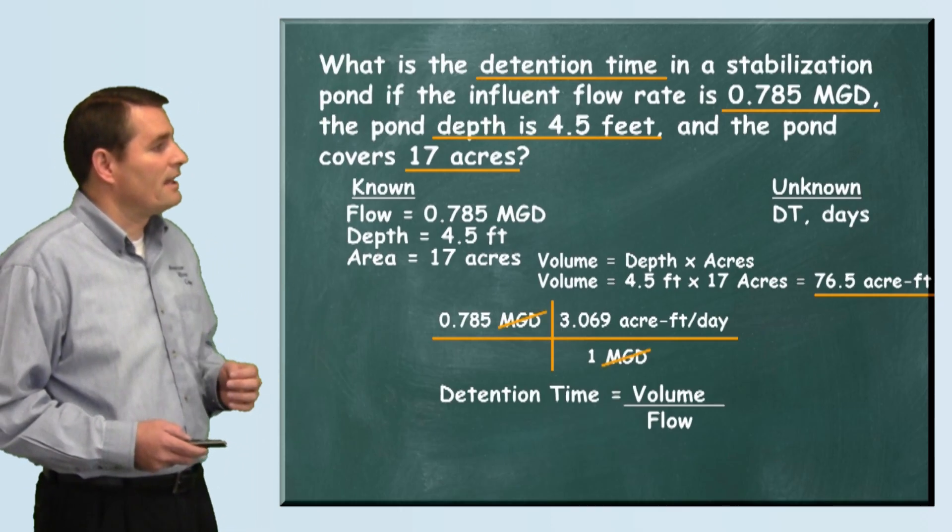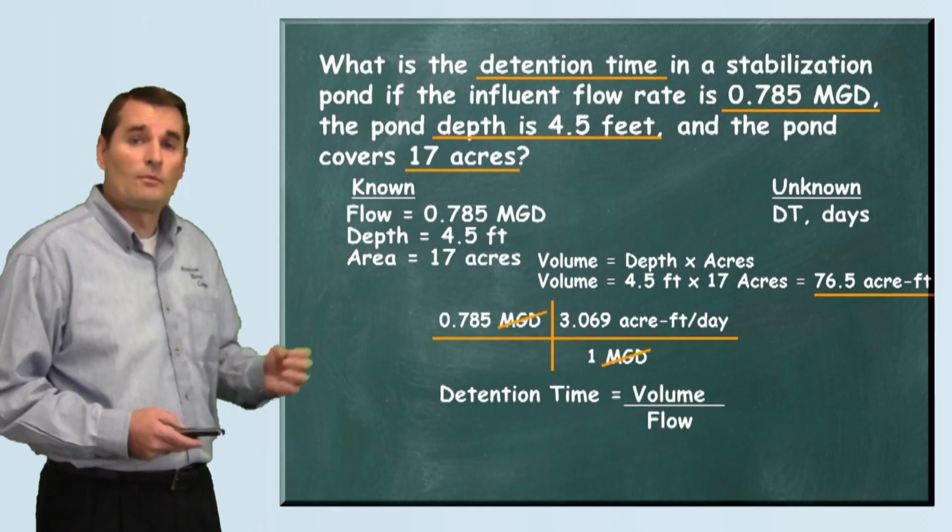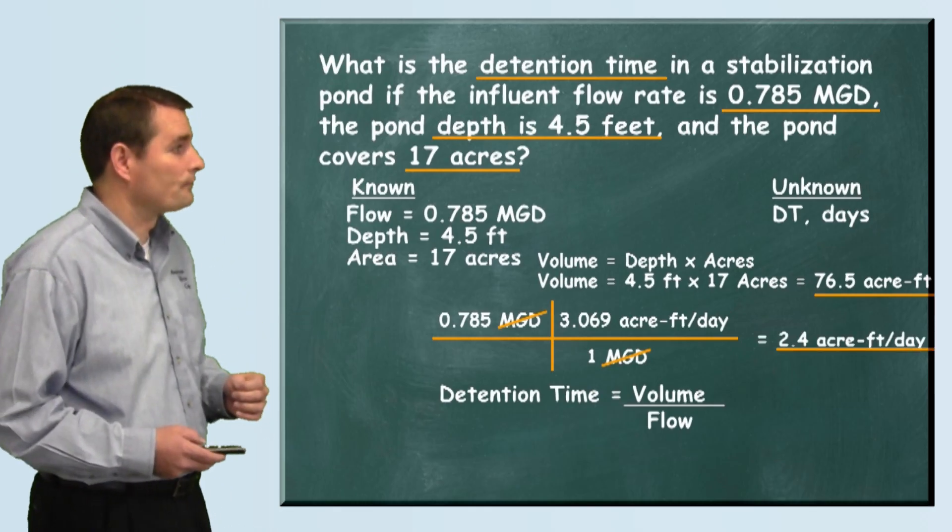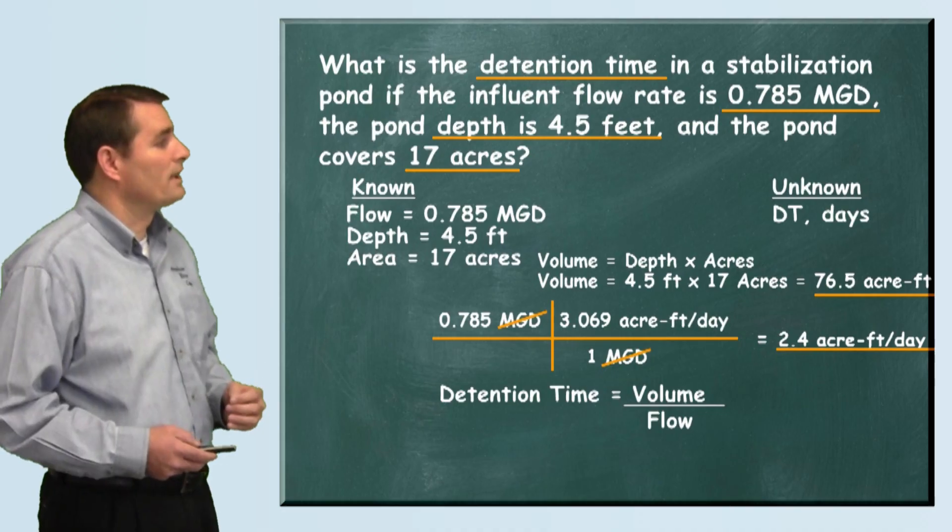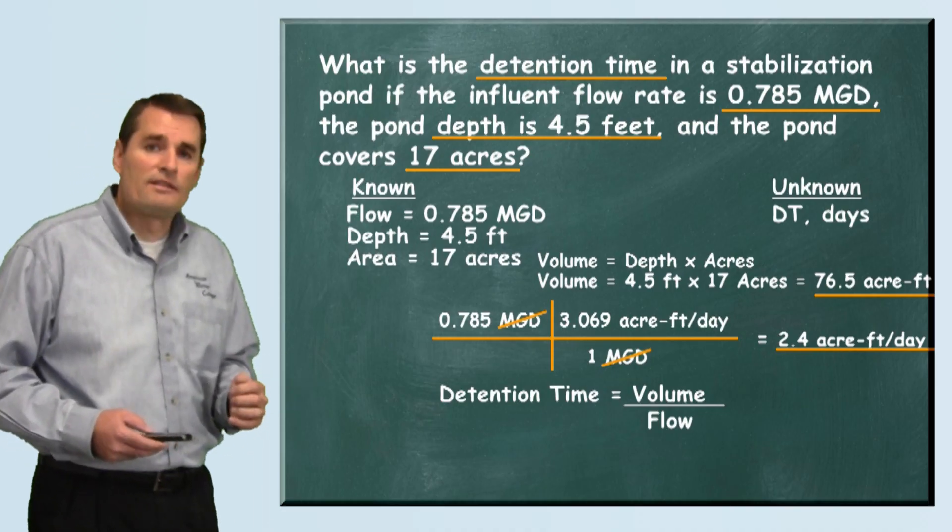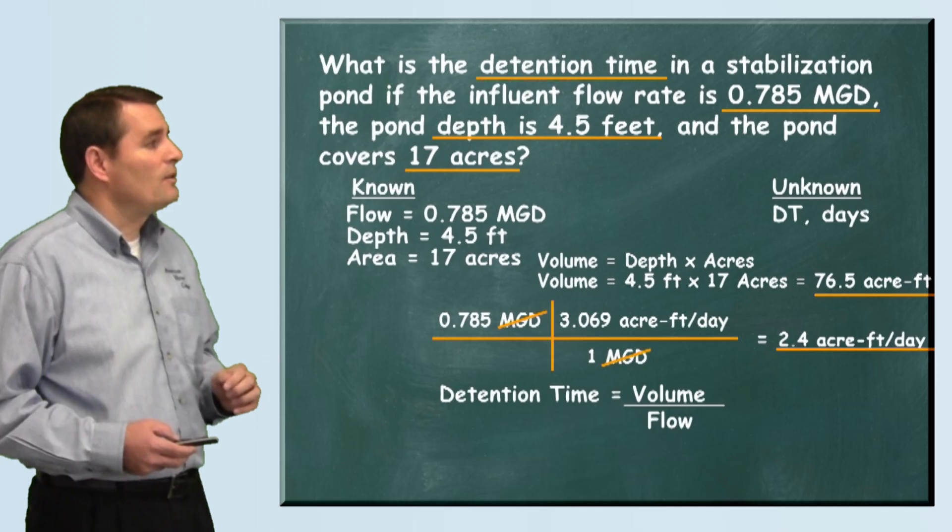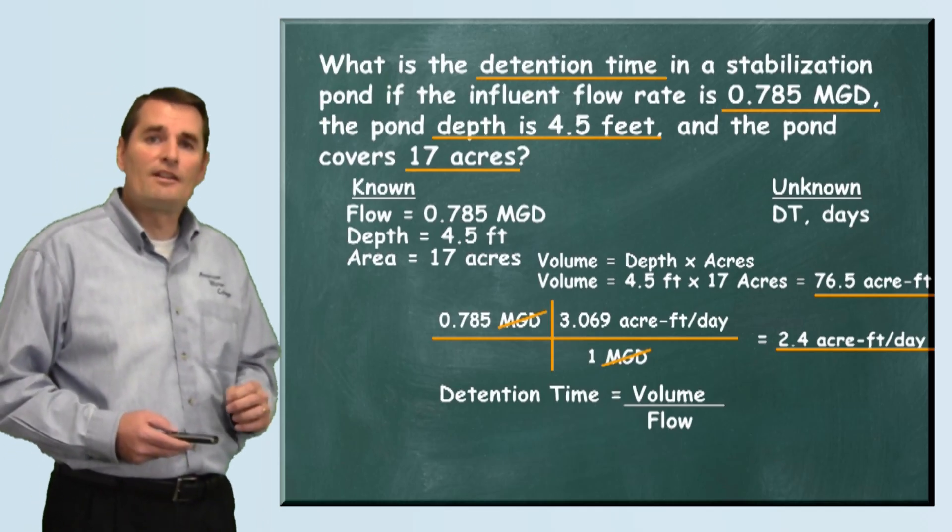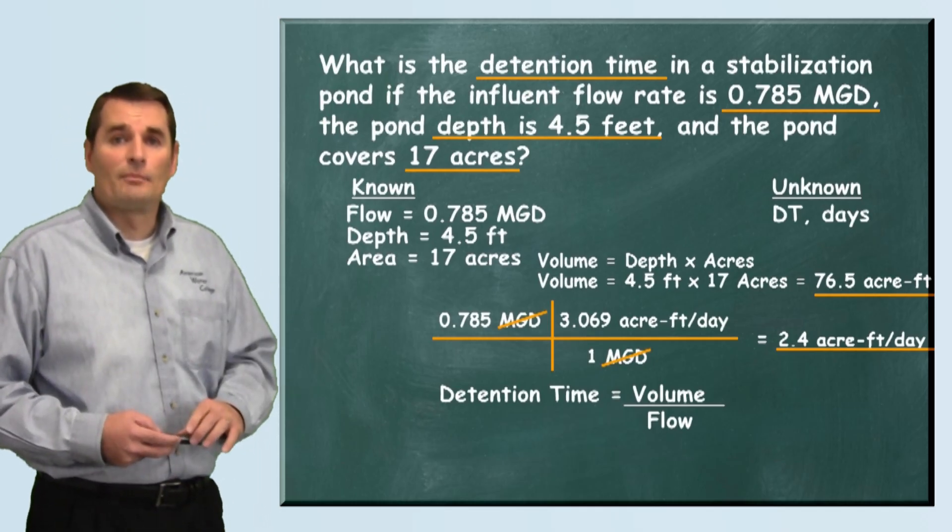We can see that our million gallons per day cancel each other out and we're left with acre-feet per day. When we do the math, 0.785 times that 3.069 acre-feet per day, we see that we're flowing at 2.4 acre-feet per day into this pond.